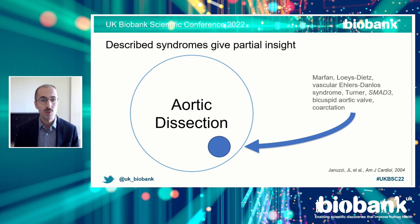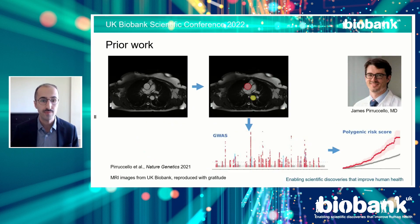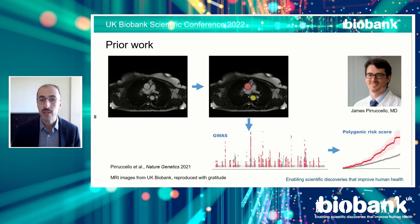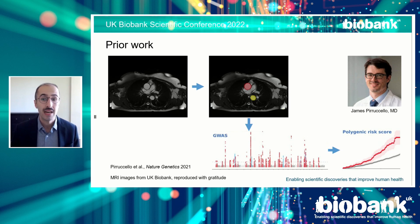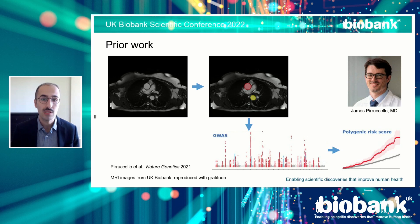If the ascending aorta remains dilated, it is at risk for tearing or dissecting. At that point, patients unfortunately can face 50% mortality before they even arrive at a hospital. Given that this disease often goes undetected until it is too late, it is important to ask how we might identify people who are at risk and who might benefit from early screening. Our group and others have asked: what are the common genetic variants that contribute to aortic diameter? In our prior work led by James Piraccello, we applied deep learning to UK Biobank cardiac MRI images to identify and measure the aorta in the chest.